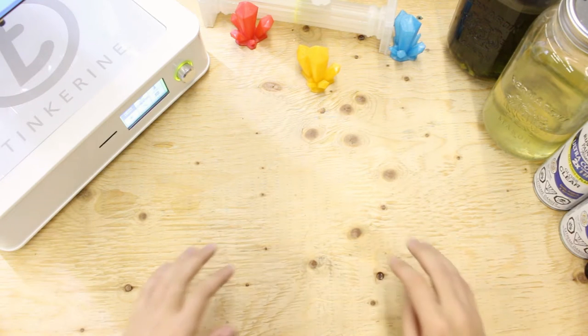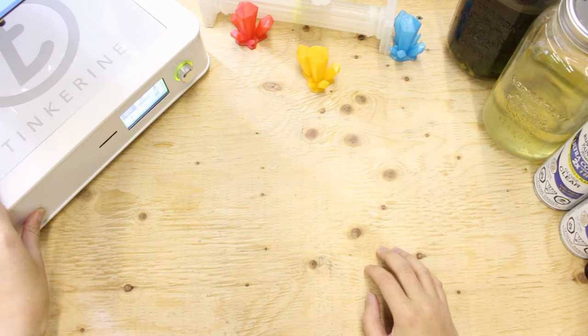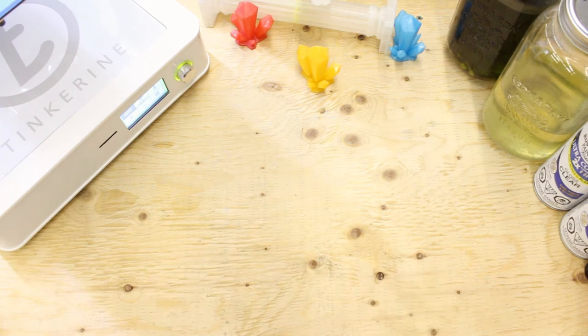Welcome to another episode of Tinkering Experiments. Today we are going to test if printing upside down with the Ditto Pro can eliminate overhangs so you can print without support and have them come out smoother.